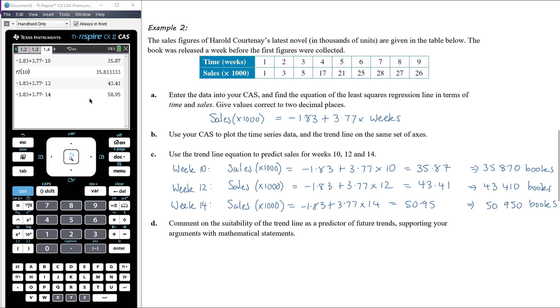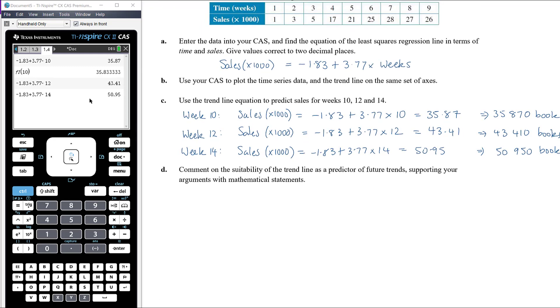Comment on the suitability of the trend line as a predictor for future trends supporting your arguments with mathematical statements. So what we notice here is that the trend line, and if we have a look at our plot again, the trend line's obviously a straight line with a positive gradient. So that means that's going to predict as time goes on, the sales increase every single week, which is actually not realistic. This is likely to be a sort of cyclical trend. We'll get a peak where the book's popular, lots of people are buying it, and then it'll drop off. New books will come out. This author will release his next book, and people will move on to that, and so the sales will drop off. So it might be a valid model. So interpolation might be fine, and maybe extrapolation for the next couple of weeks after this data set might also be fine, but at some point the sales are going to actually decrease, and that's not catered for in this particular model.